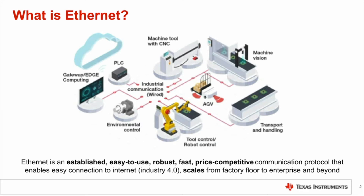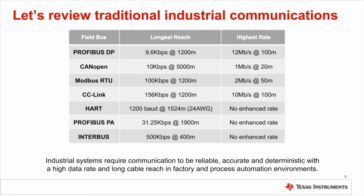But it didn't used to be that way. Let's go back in time and look at some traditional industrial fieldbuses and see what they were capable of. There's a list here of various traditional industrial communications, and I want to draw your attention to the center and right-hand columns. Many of them were able to drive quite long distances — for example, Modbus can drive as far as 1.2 kilometers, shown in the center column. In the right column, it's only able to drive up to 50 meters, because data rate and cable reach for these fieldbuses are inversely proportional. So with the increase in data and speed needed in industrial applications, these fieldbuses don't necessarily meet all of the needs any longer.